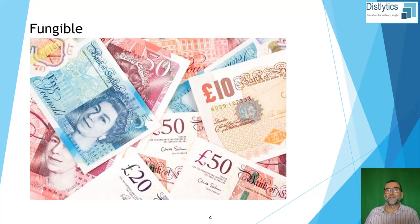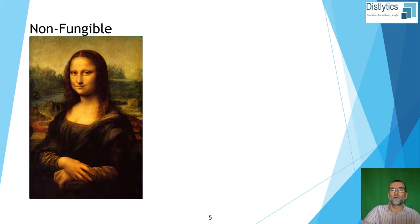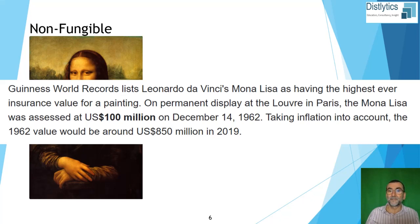We describe something as non-fungible when it's unique, original and authentic and retains its own value — not something general. It can't be exchanged like for like. So you can't exchange the Mona Lisa, for example. And it's not divisible — well, not without losing its value. So something that is non-fungible is also scarce. There's only ever one of it.